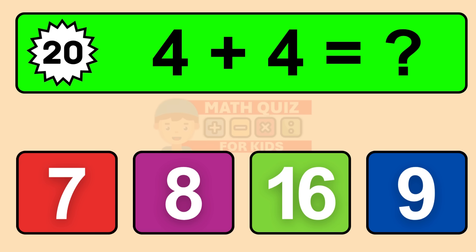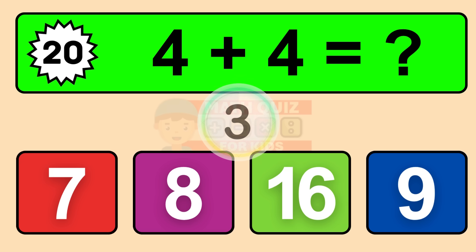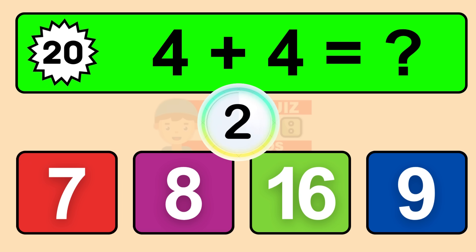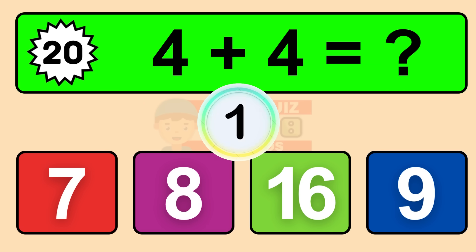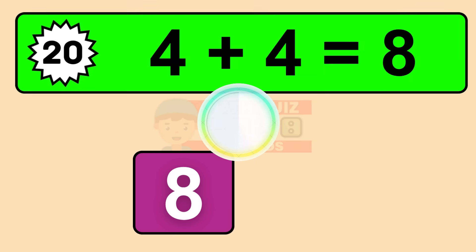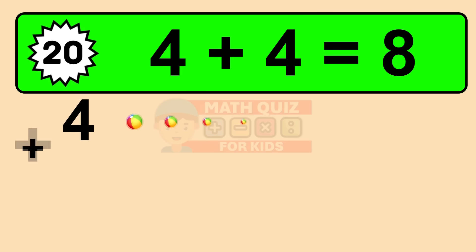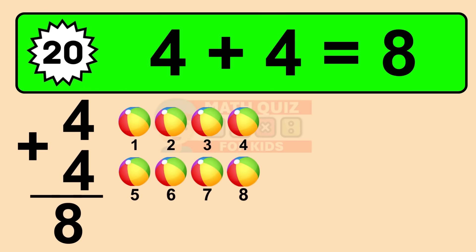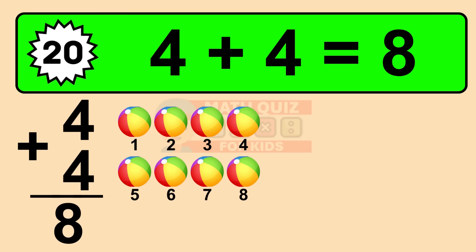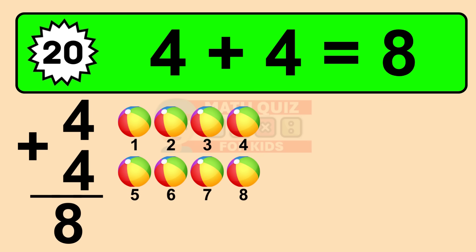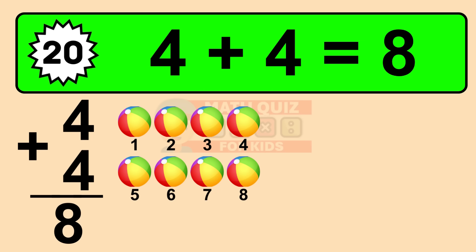Question twenty: four plus four equals what? The answer is four plus four is eight. Let's count it. One, two, three, four, five, six, seven, eight.